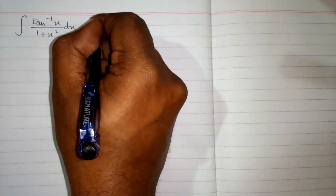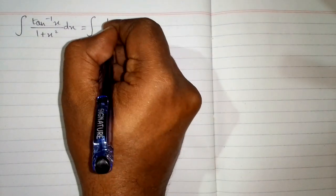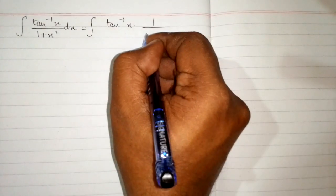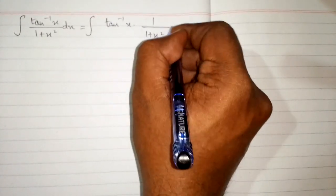First, this integral can be written as tan⁻¹(x) multiplied by 1 over 1 plus x squared dx.